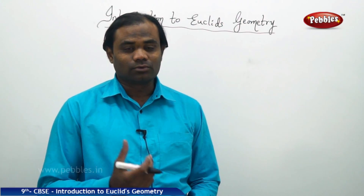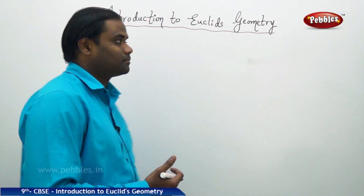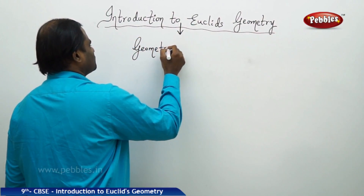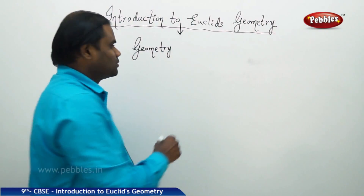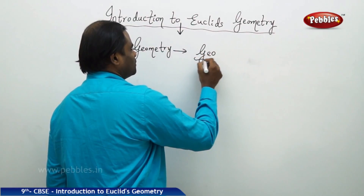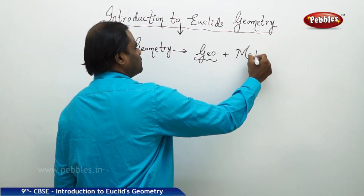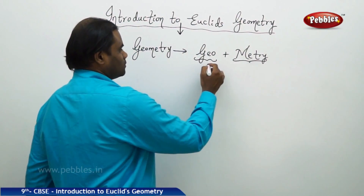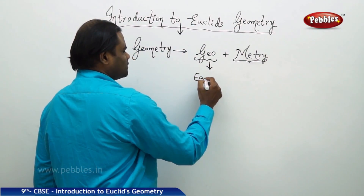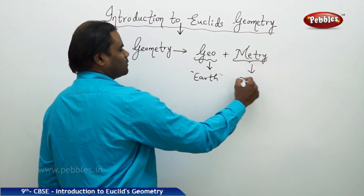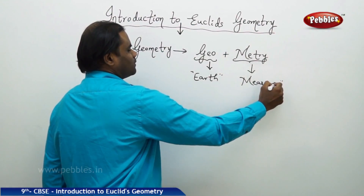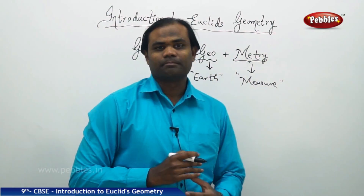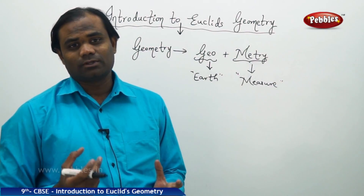Let's see the root cause of the word geometry. In the branch of mathematics, geometry is divided into geo plus metri. Geo in Greek generally refers to earth, and metri in Greek refers to measure. So the measure of earth is what is called geometry.